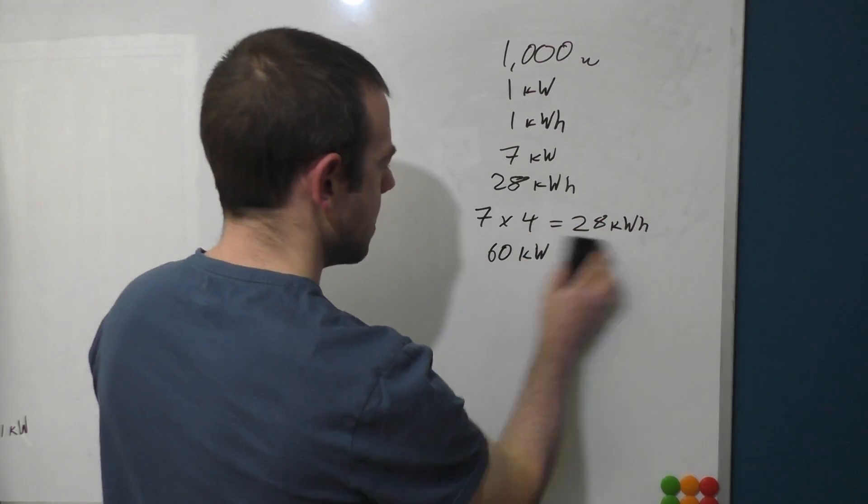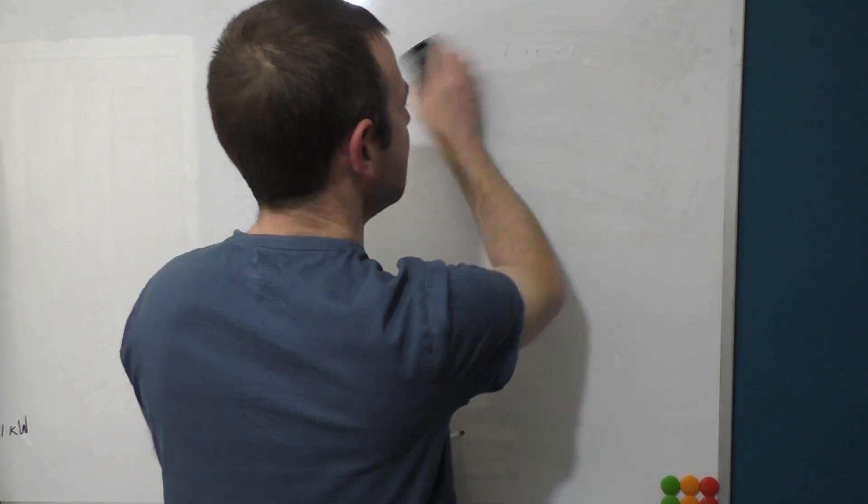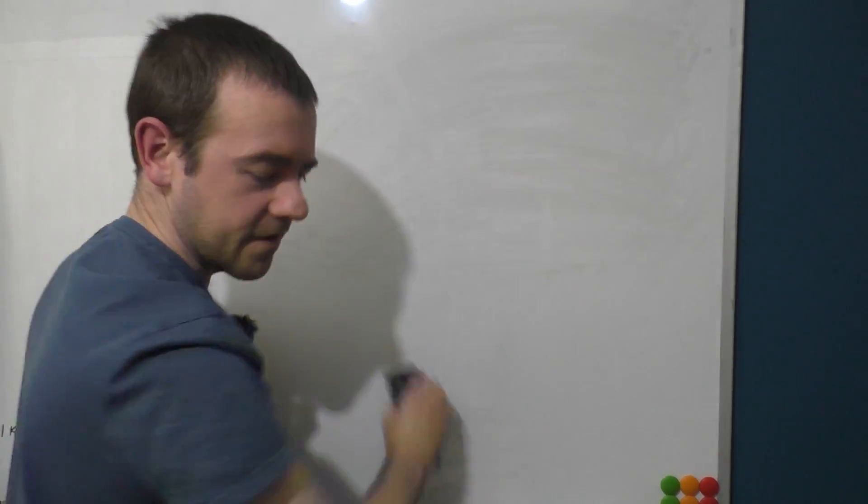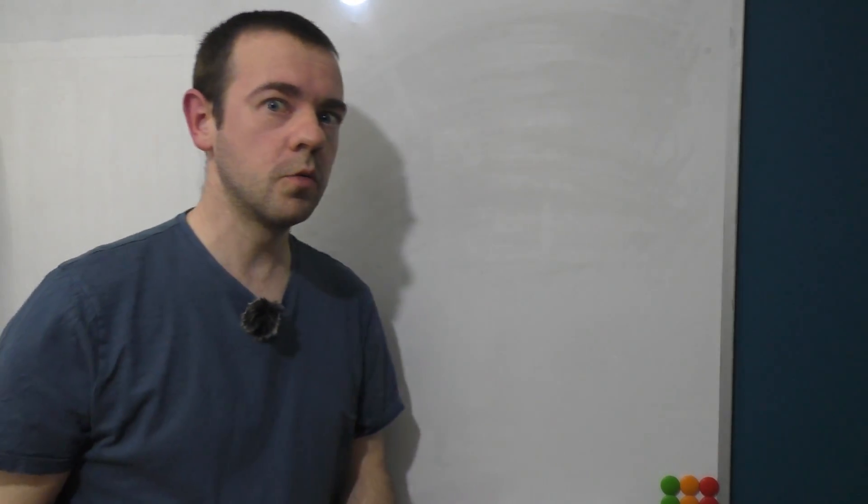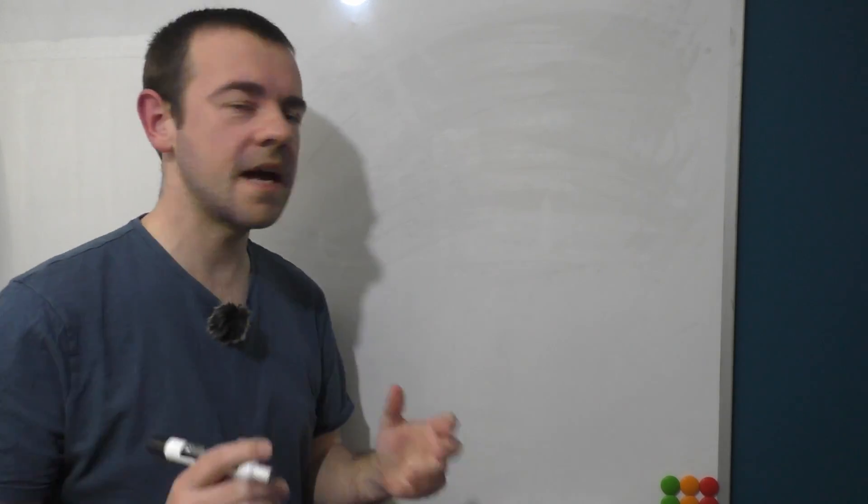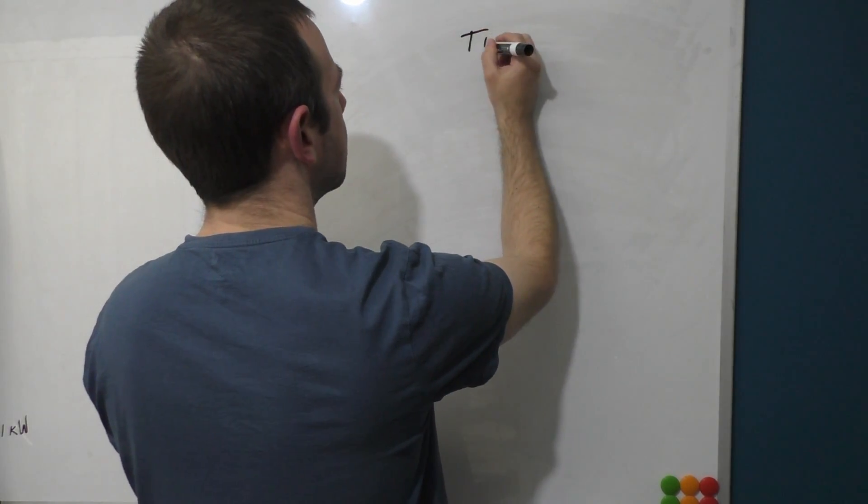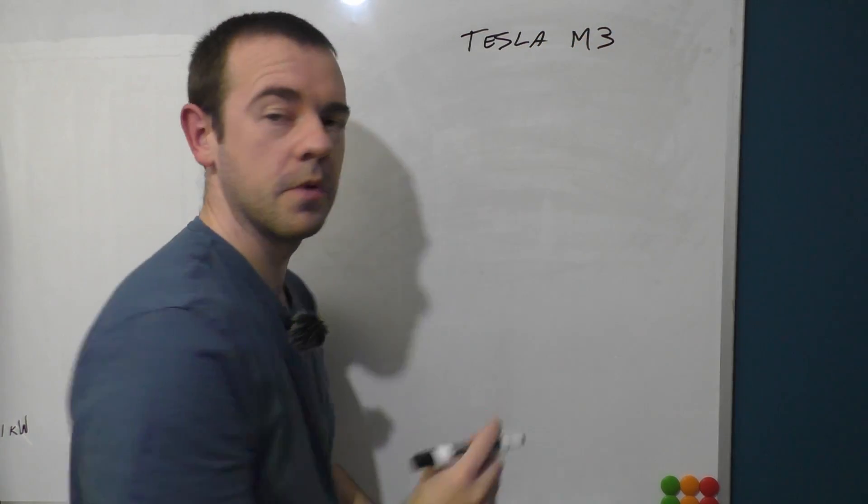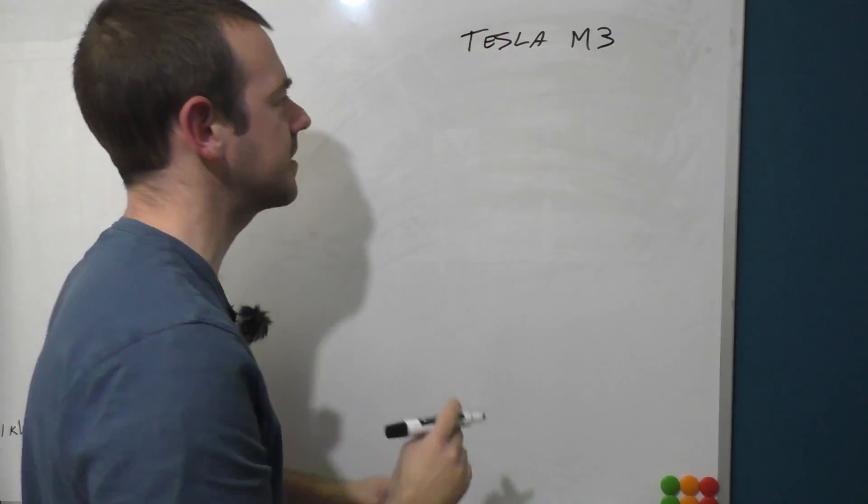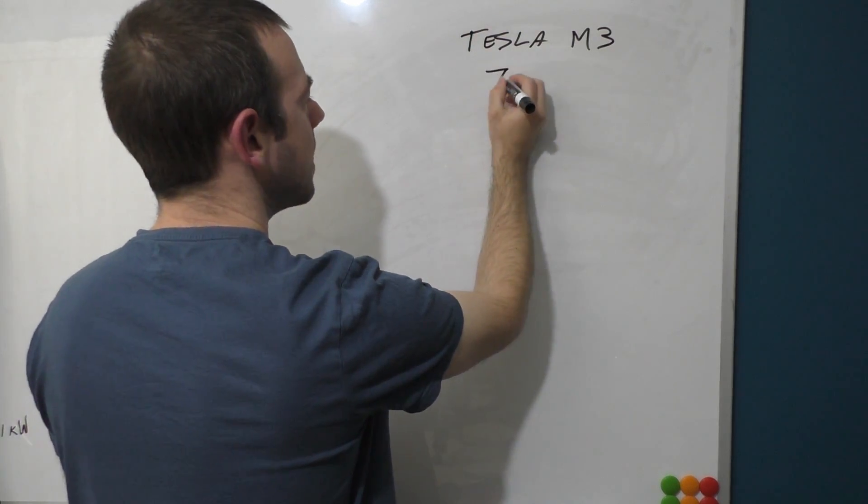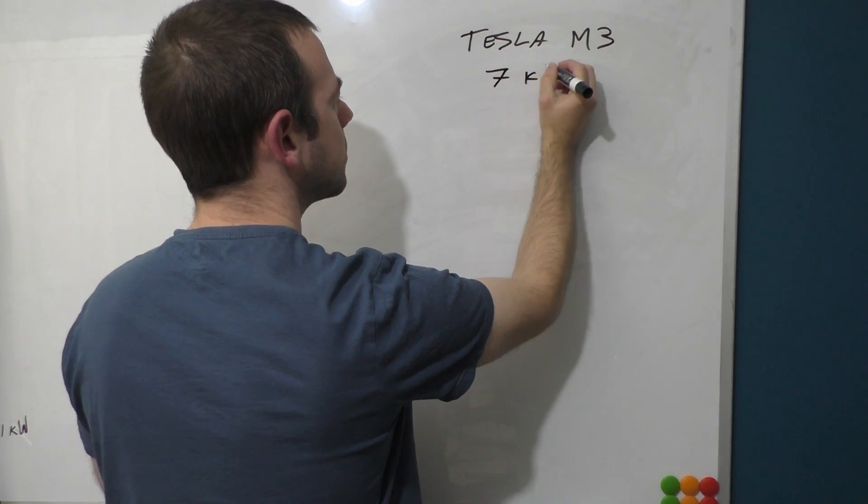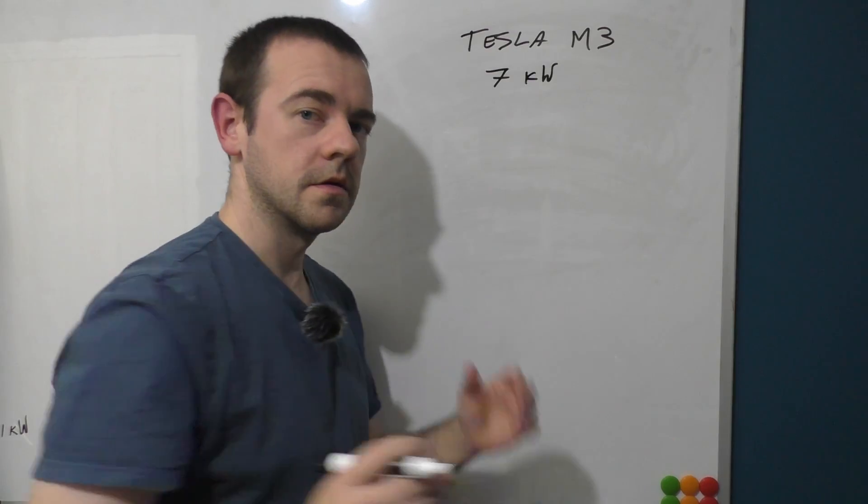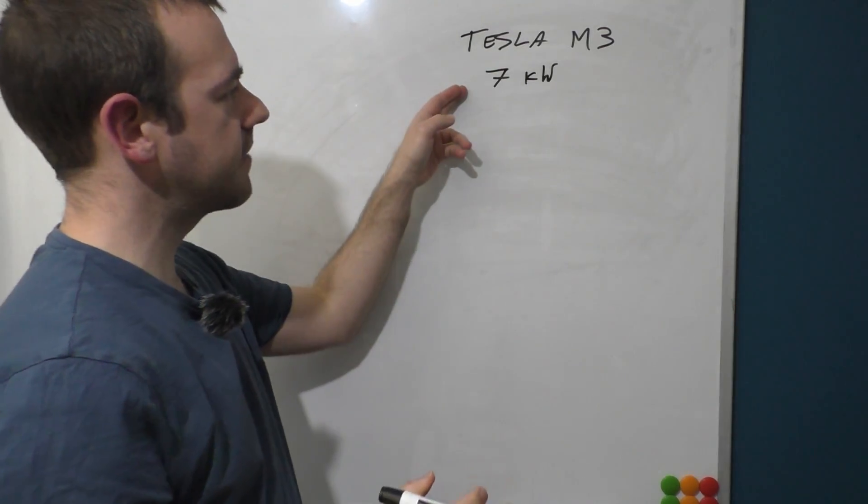Let me rub that out and do it a little bit differently now with real-world examples. I have a Tesla Model 3, Tesla, I'm going to say M3 which will annoy the BMW people but you know it's just easier to write. I also have a seven kilowatt charger in my garage.